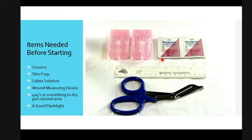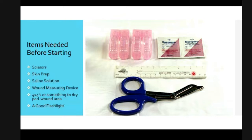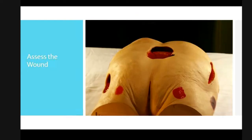Items needed before you start: you want a really great pair of scissors. Technically the curved scissors are not always the best to cut with; a straight pair is sometimes much better. A larger pair works very well with the black foam. You'll also want skin prep, saline solution for a really great irrigation, some type of wound measuring device, four-by-fours, something to dry the peri-wound area so you're guaranteed to get a nice seal, and a great flashlight — always needed anytime we're looking at wounds.